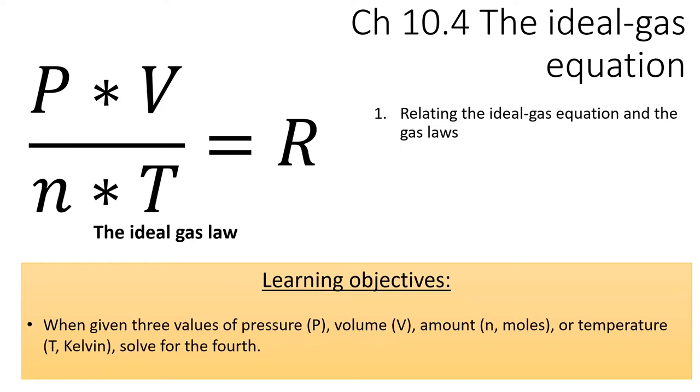Welcome! In this section, we'll combine the individual relationships we explored in the last section into the almighty ideal gas equation. With this equation, we can take any three of the following variables and solve for the fourth: pressure, volume, amount, or temperature.